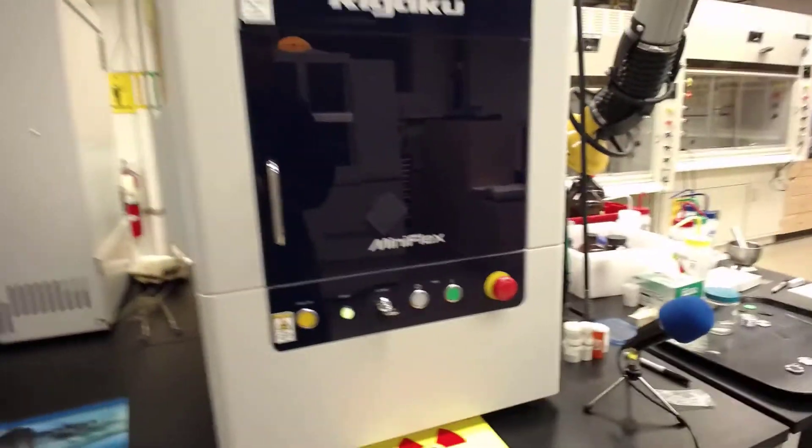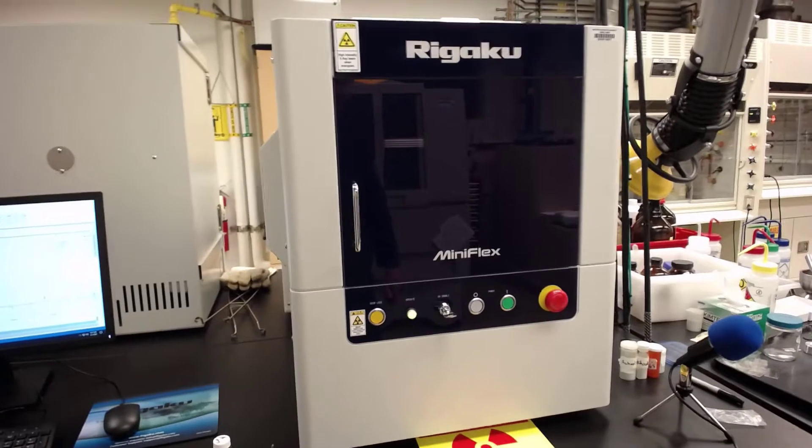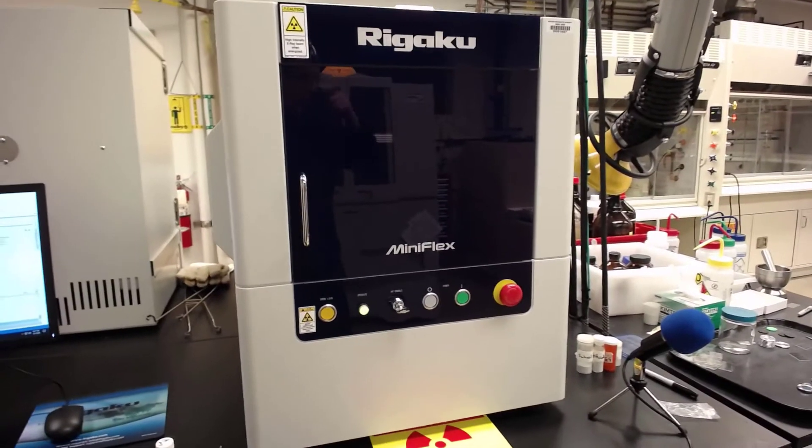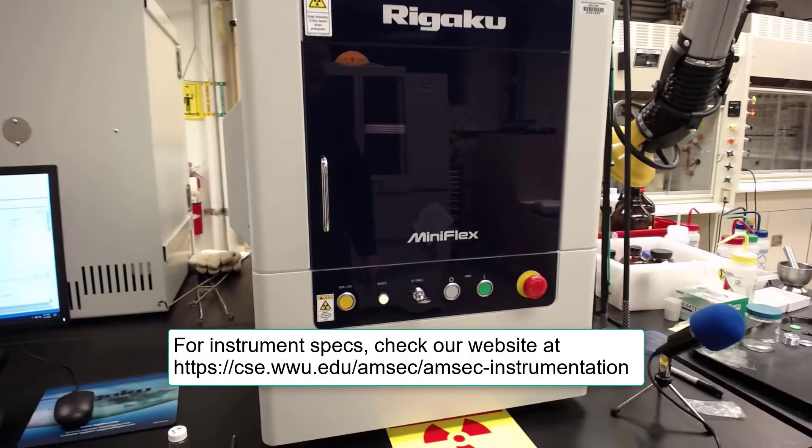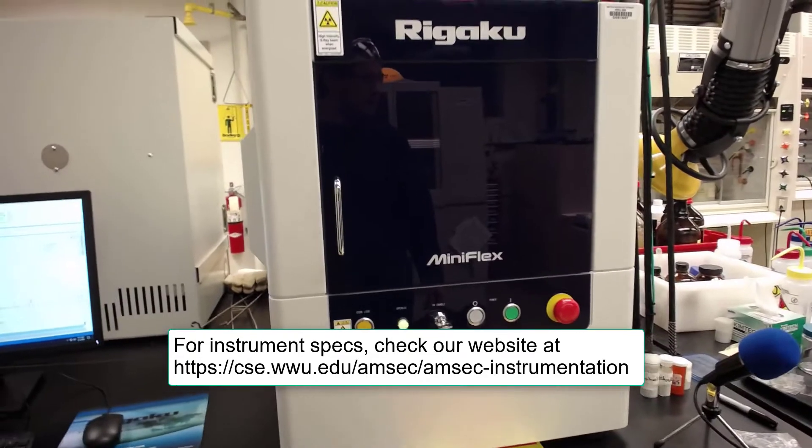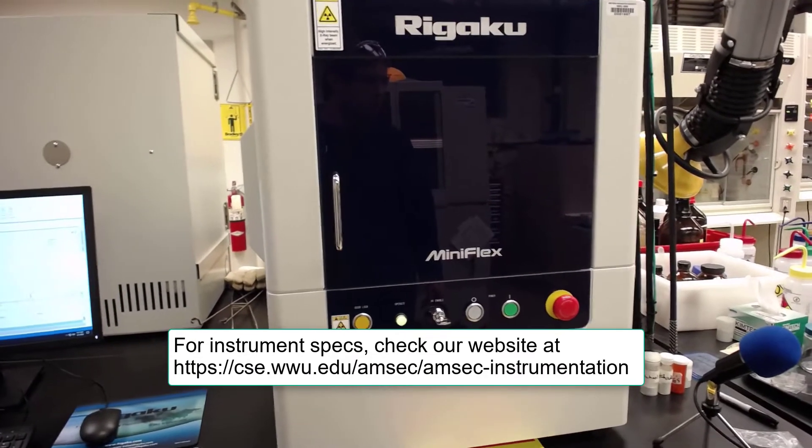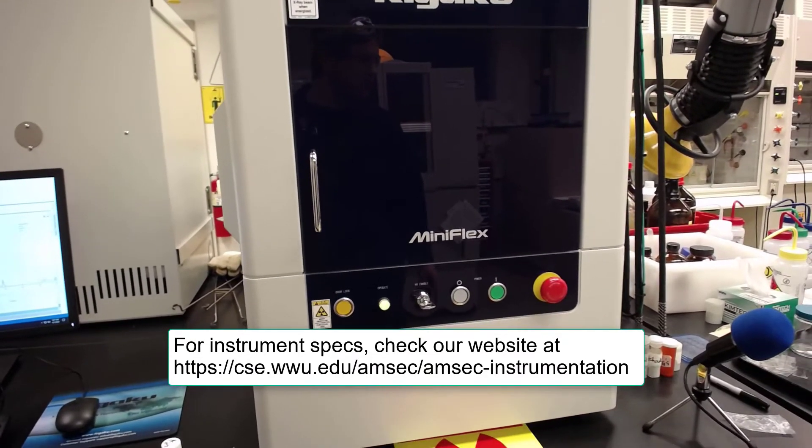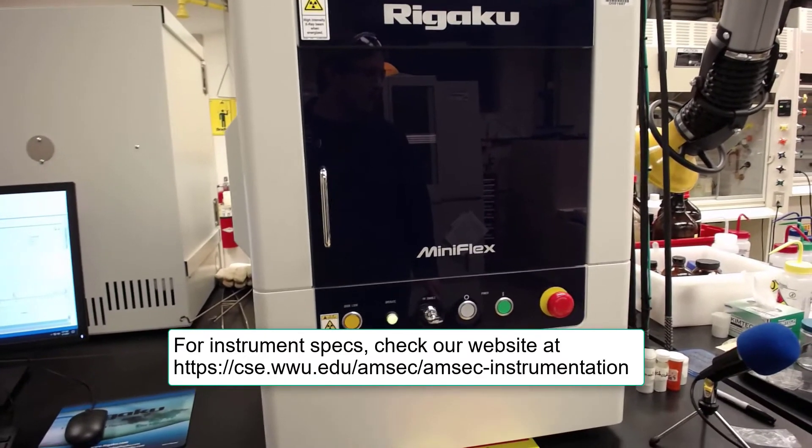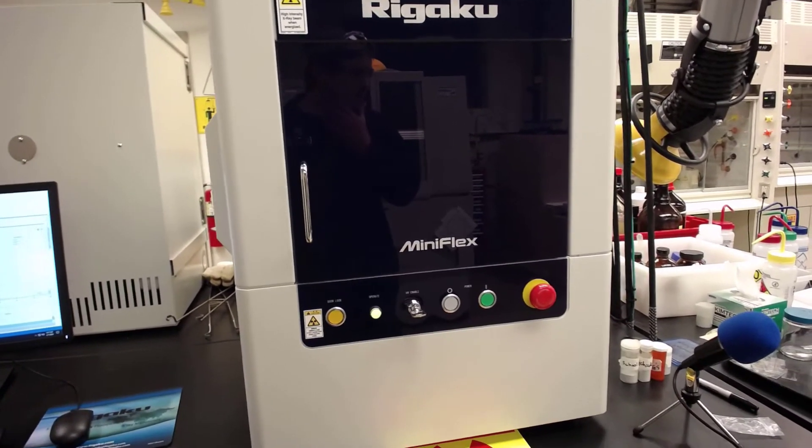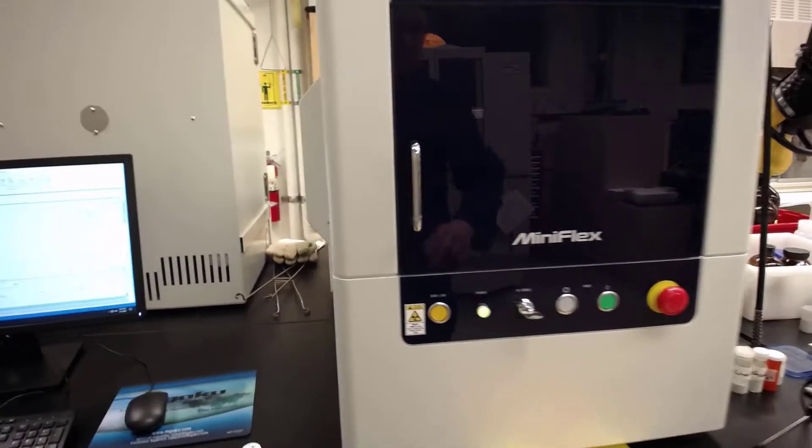The instrument itself. This is one of two XRDs that AMSEC has. This is our high throughput benchtop system. It's a Rigaku MiniFlex 600 G. And it is a high throughput system with an 8-position auto sampler.